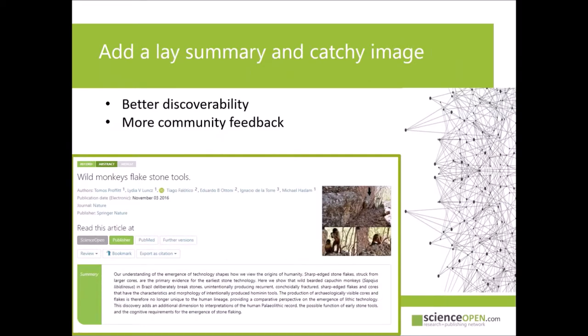The next level of engagement is the option on Science Open to enhance the metadata around your article. You can add an author summary in layman's terms along with a catchy image to get attention. This will help you to reach a broader audience, can encourage more community feedback, and increases the discoverability within the Science Open platform by providing more text and concepts for our search engine. So your article will show up more often as a similar article, for example. We also like to regularly promote articles on the site with author summaries.